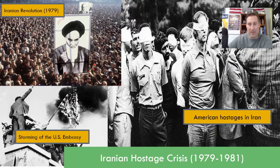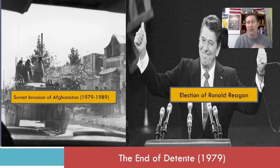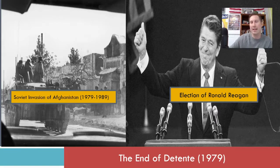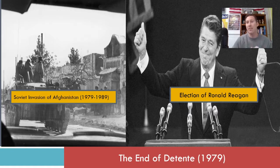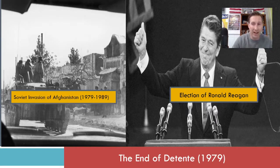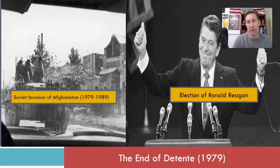At the exact same time as the Iran hostage crisis, the Soviet Union invaded Afghanistan, which really killed détente. The US saw this as the Soviet Union making a play for the Middle East, since Afghanistan borders Iran. The United States immediately broke off relations with the Soviet Union, SALT II was defeated, an embargo was placed on grain shipments to the USSR, and the Soviet Union was criticized for human rights violations. This led to an escalation of Cold War tensions that were further solidified with the election of Ronald Reagan in 1980, who took a much more hardline stance against the Soviet Union.